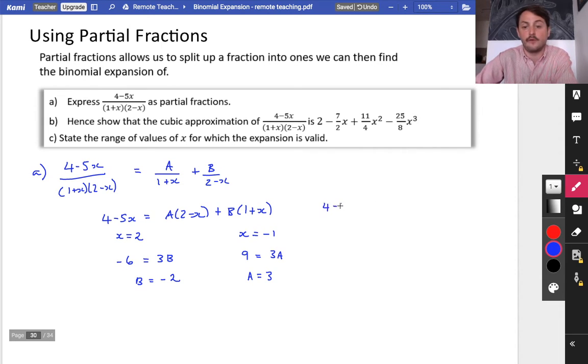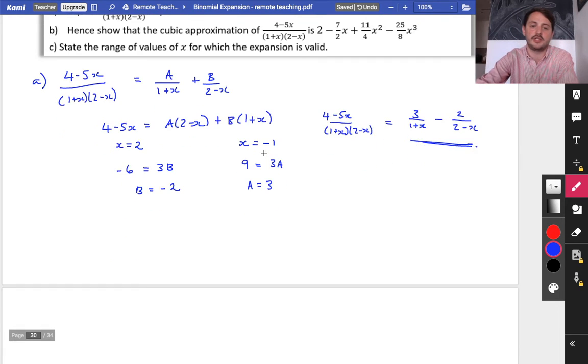Hence, (4 - 5x) over (1 + x)(2 - x) is equal to 3 over (1 + x) minus 2 over (2 - x). Part a of the question done. Hence, show that the cubic approximation of this is this plus this plus this plus this. And then we're going to state the range of values for which the expansion is valid.